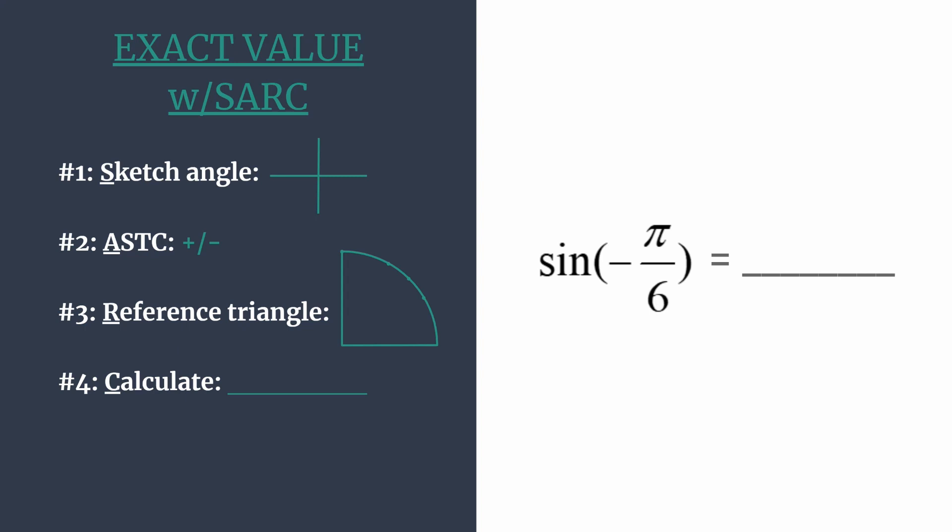Okay, so from our standard position on the positive part of the x-axis we simply rotate pi over 6 and we'll get an angle with a terminal side in the fourth quadrant.